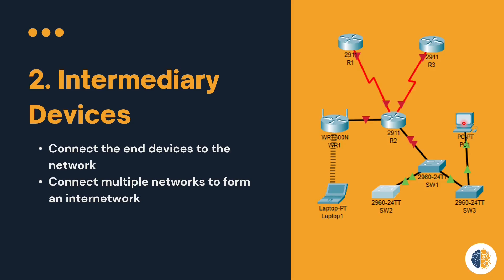When you connect to the internet at home, school, or any organization, you are connected to an intermediary device — maybe an access point, a switch, or directly to a router. Intermediary devices also connect multiple networks to form an internetwork.